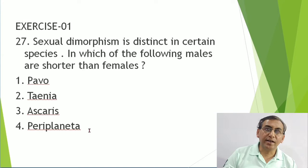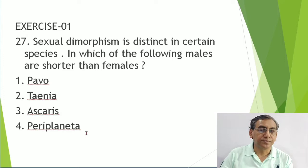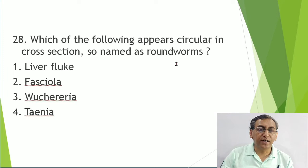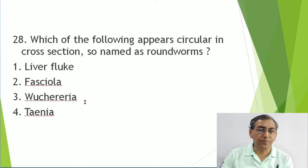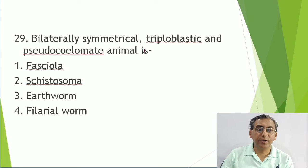Wuchereria bancrofti is the filarial worm and it looks circular in cross section. Bilateral symmetry starts from Platyhelminthes. Triploblastic starts from Platyhelminthes. Pseudocoelomate means only nematodes/Aschelminthes. The elementary canal is complete with a well-developed muscular pharynx - that is the character given in NCERT for Aschelminthes.